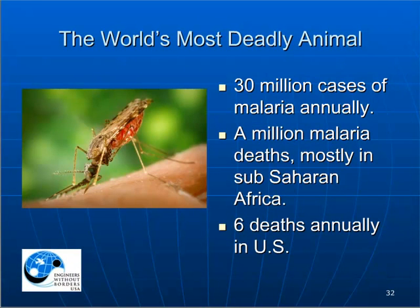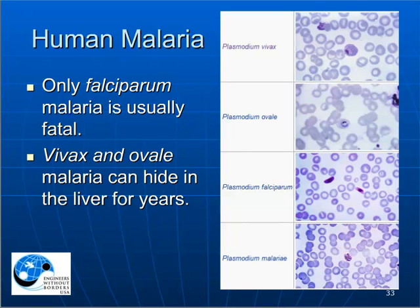The world's most deadly animal kills at least a million people every year — the mosquito. Mosquitoes carry many deadly diseases including malaria, Japanese encephalitis, dengue, West Nile virus, and more. There are four kinds of human malaria. Only falciparum malaria, more common in Africa, is usually fatal and can kill in a matter of days. Vivax and ovale malaria are far less dangerous, but what is most interesting is that they can hide in the liver for years — you can get malaria for the first time long after you've left the malaria zone. This can be prevented by taking a different anti-malarial medicine after your return from a heavily infected area.